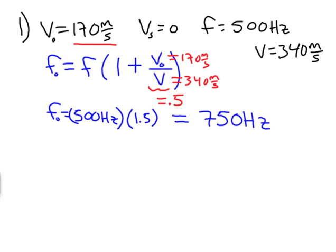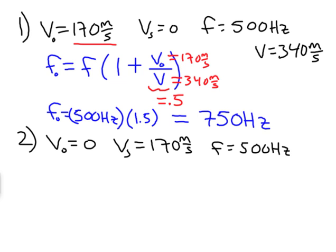Let's now look at what we get for situation two. In situation two, the observer speed is zero, the speed of the source is 170 meters per second, and we'll stick with the same frequency of 500 hertz and the speed of sound 340 meters per second.